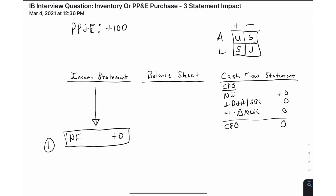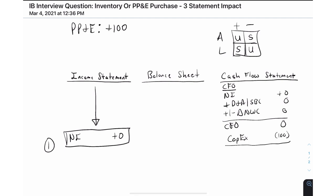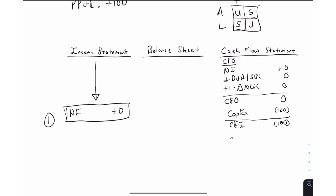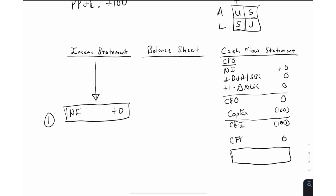We did purchase a factory, so we need to reflect that — it hits cash flows from investing. We'll call this capital expenditures, or capex, at negative $100, which is part of CFI — cash flows from investing. Cash flows from financing: no ins and outs from debt or equity, so nothing there. The change in cash is therefore negative $100, completing step two.